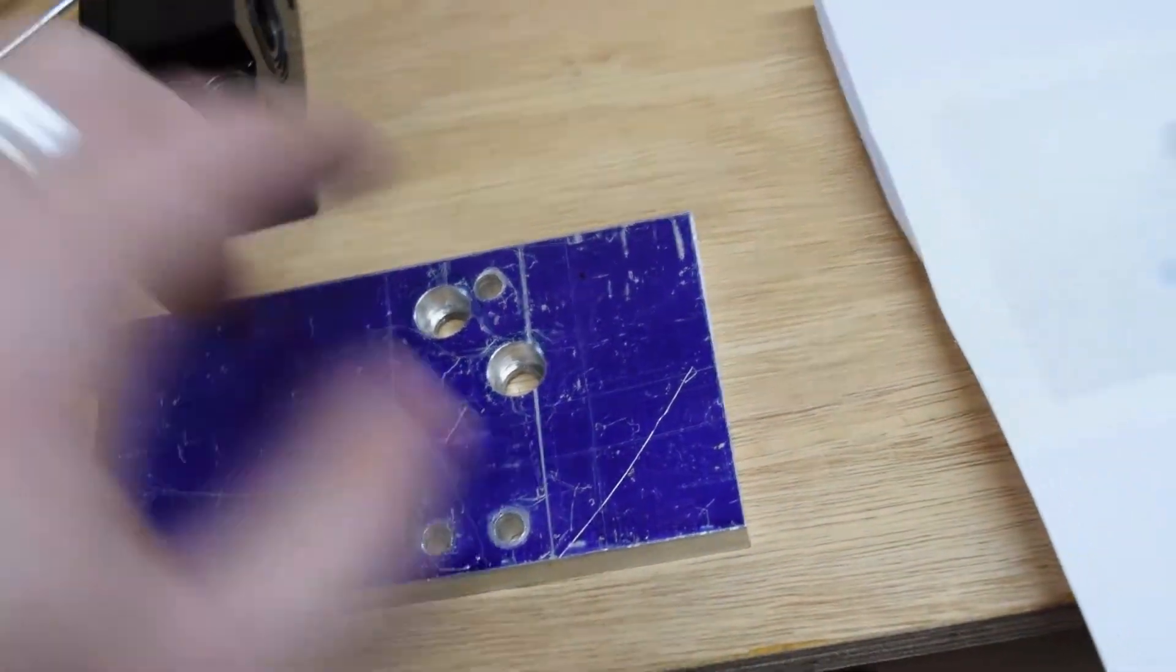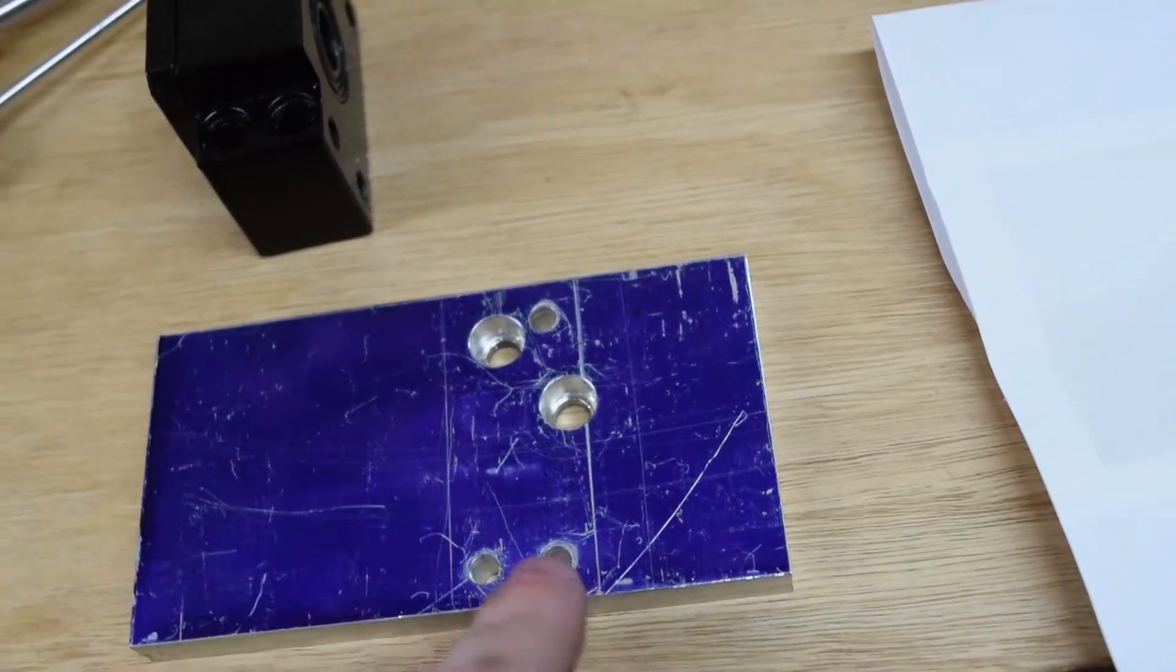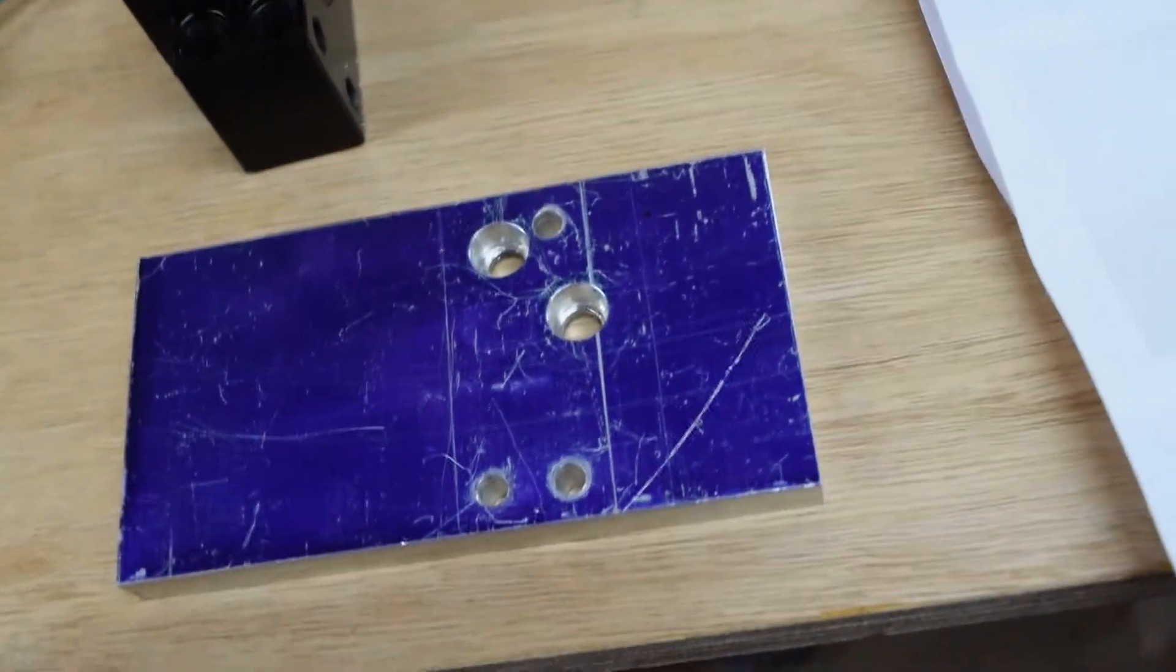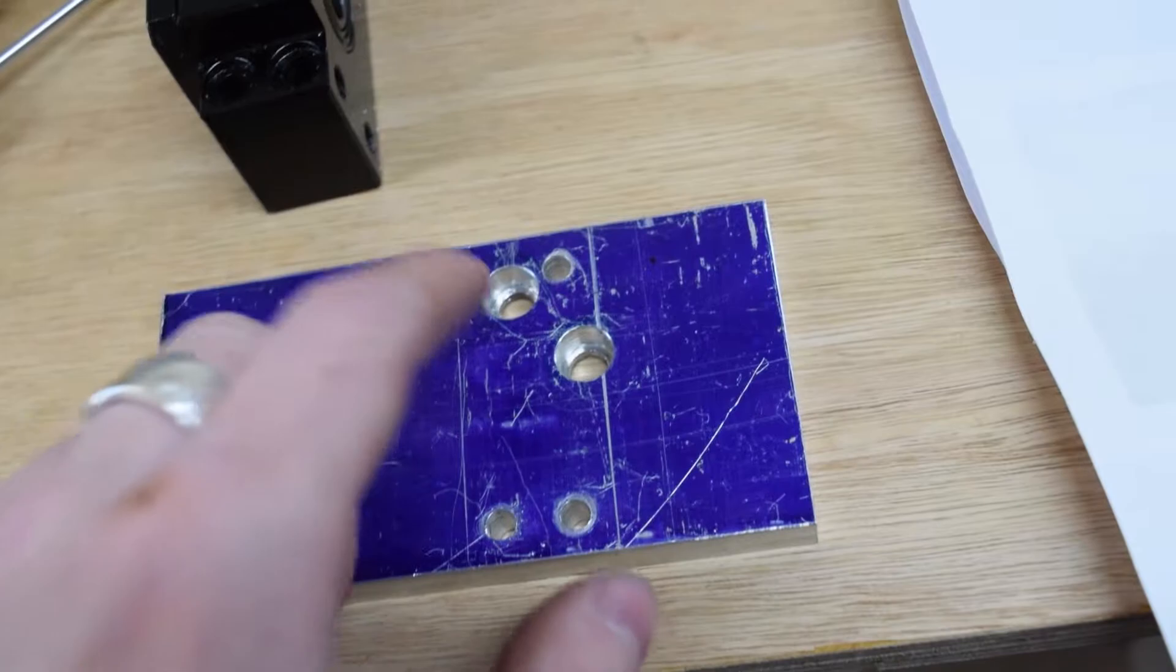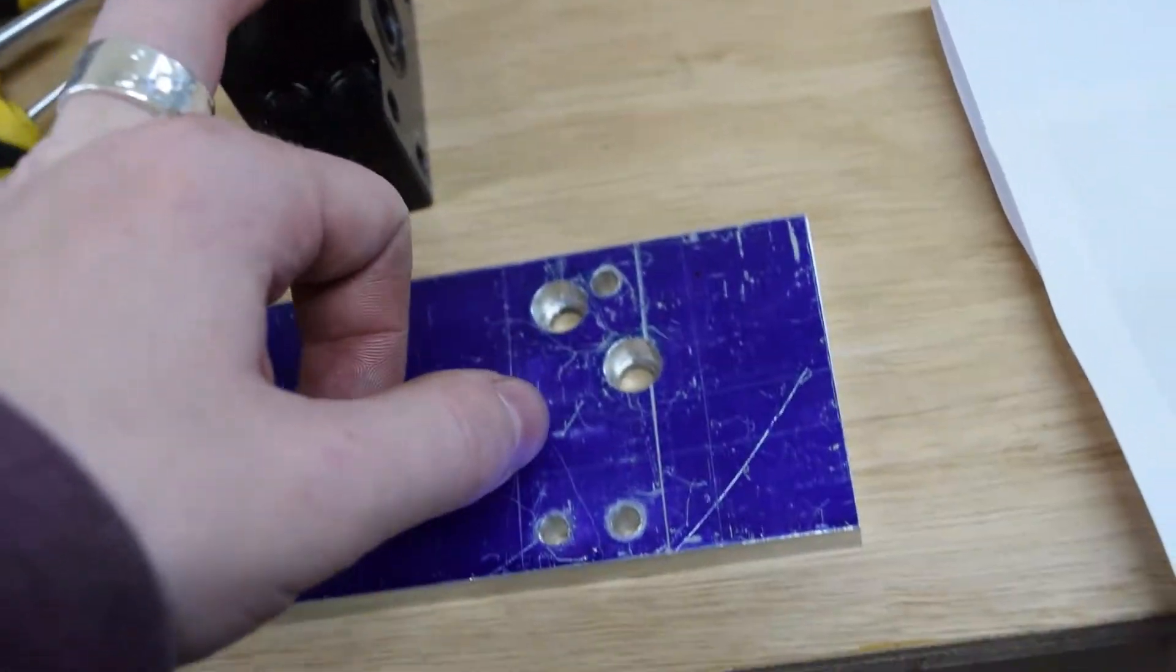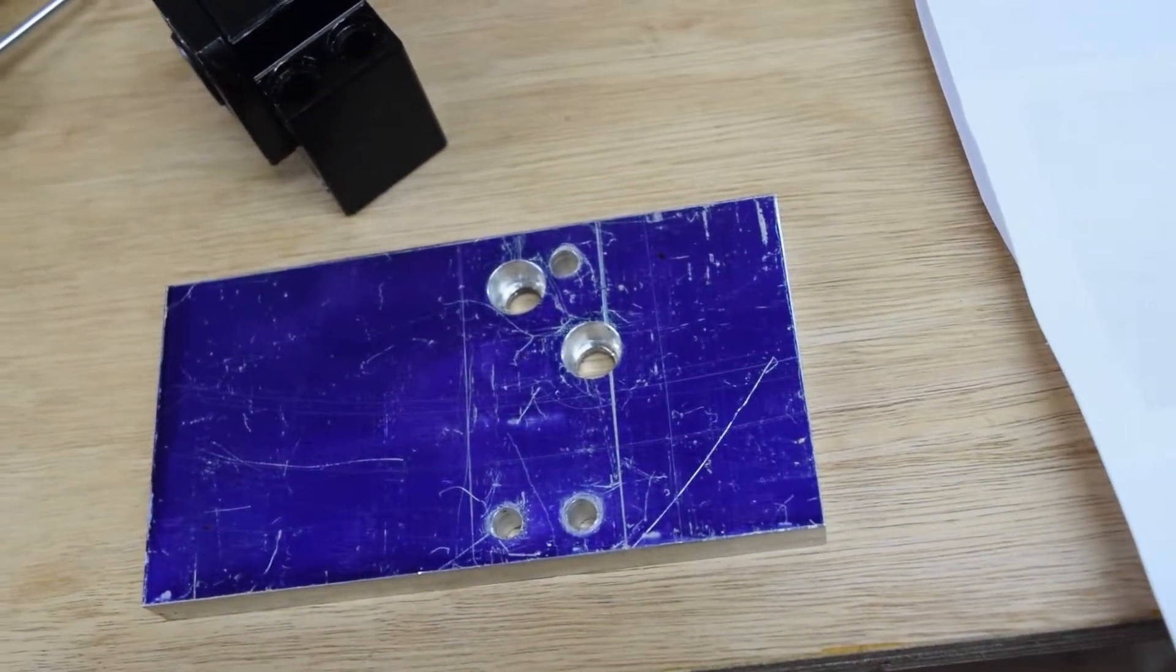That's where these counterboards so they can sit behind. And obviously we're not using the four holes because it would clash with the counterboard hole. But three will be perfectly fine. There's not a lot of stress on these once it's going.